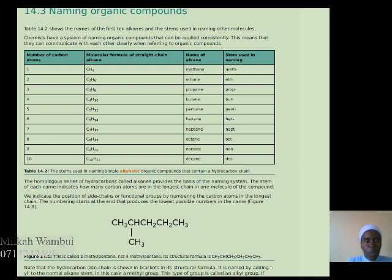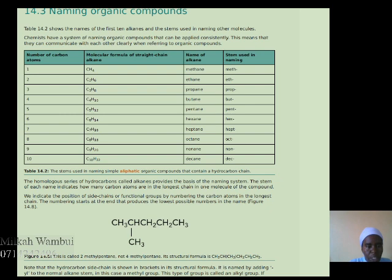In naming organic compounds, we start with alkanes. An alkane with one carbon atom is called methane; its molecular formula is CH4 and the stem used is meth. The compound with two carbon atoms has molecular formula C2H6, it is known as ethane and the stem is eth. The compound with three carbon atoms is written as C3H8, the name is propane and the stem is prop. The one with four carbon atoms is written as C4H10, the name is butane and the stem used is but.